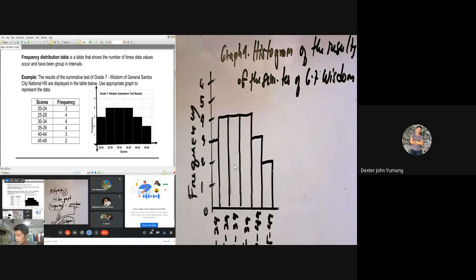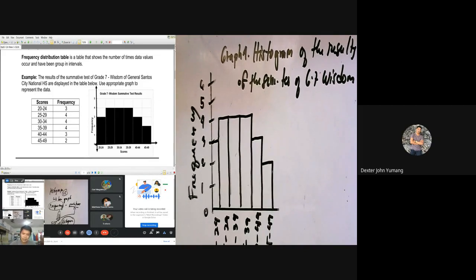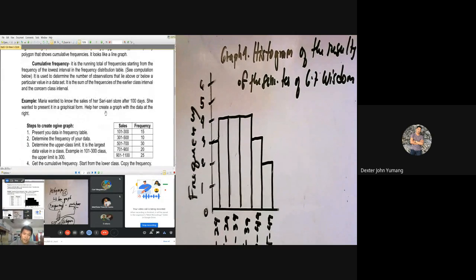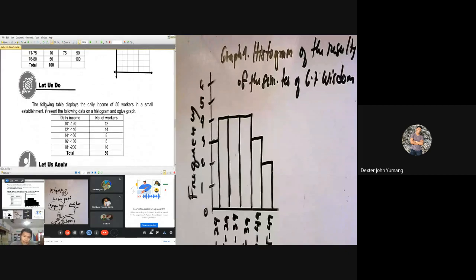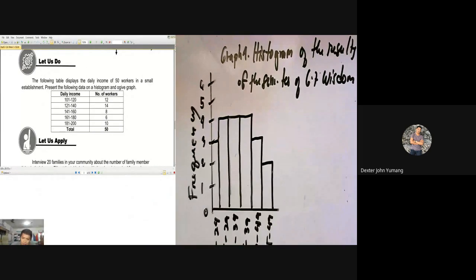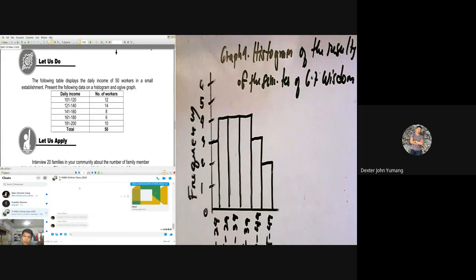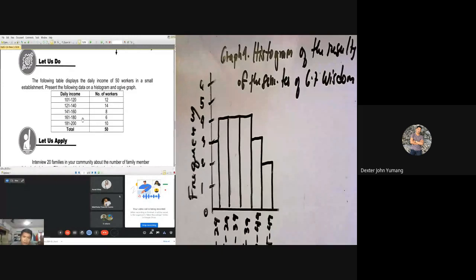So saan po kinuha itong title? From the example lang po: the results of the summative test of grade seven Wisdom. Pwedeng i-completo, pwedeng hindi. May mga katanungan po pa, pano gagawin yung steps? Wala po, sir. So easy lang naman siya, diba? So in this case, yes po. Madali lang po. Madali lang po talaga. In this case, gagawa po tayo ng ating tinatawag na histogram, and ito po ang activity natin this morning. So I would like you to screenshot kung wala po kayo nitong copy. I'll send it to your Facebook group or messenger group.